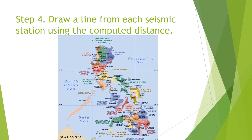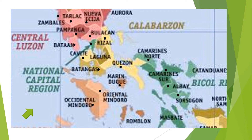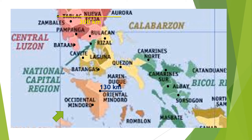Using the computed distances, you may now draw lines from the location of each seismic station on the map. Take note that this requires proper scaling to be valid. From the seismic station in Zambales, draw a line equivalent to 300 kilometers. From Oriental Mindoro, draw a line equivalent to 130 kilometers. Do the same for Camarines Sur with a distance of 330 kilometers.